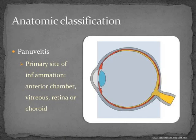After anterior, intermediate, and posterior uveitis, there is another group called pan-uveitis. Here, inflammation is seen in all parts — you have iridocyclitis, intermediate uveitis, and involvement of the retina and the choroid. When all of them are involved, we call it pan-uveitis. The primary sites of inflammation here are the anterior chamber, vitreous, retina, and choroid.